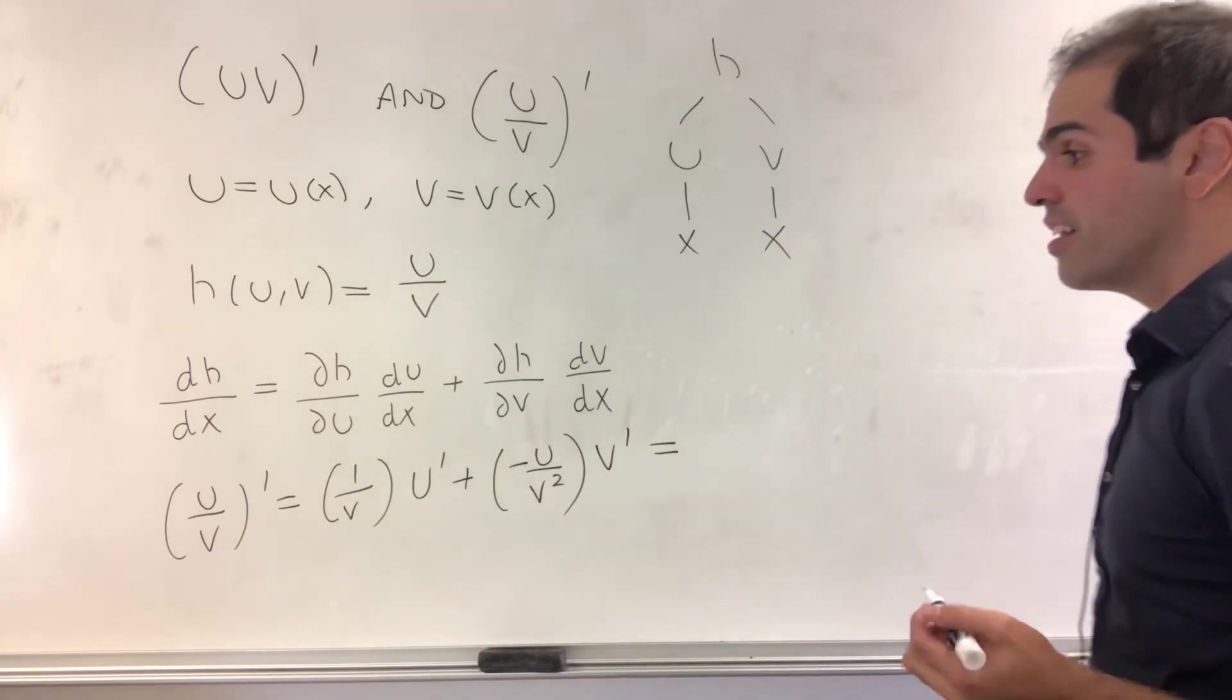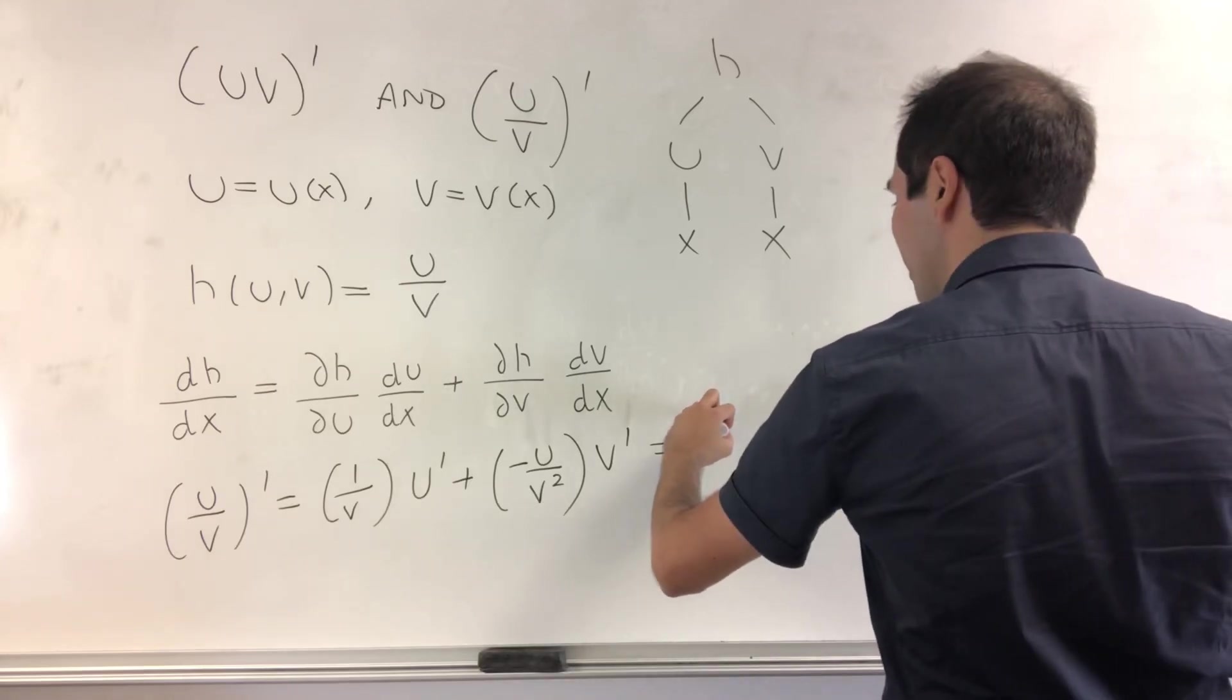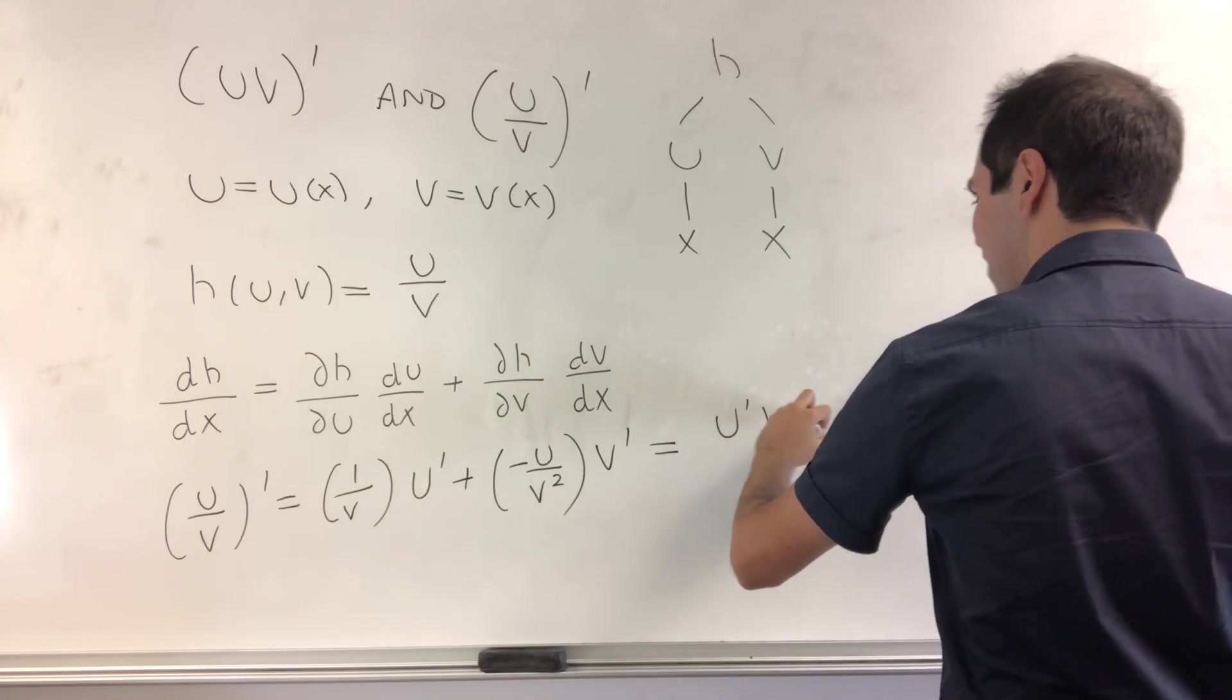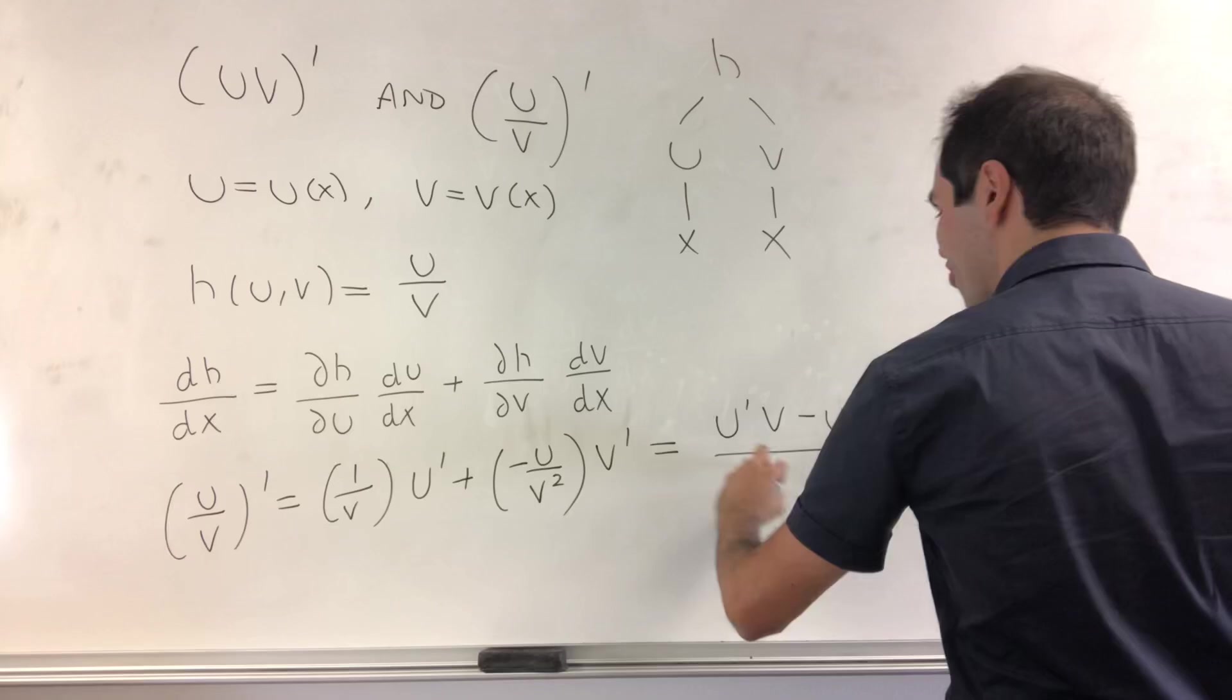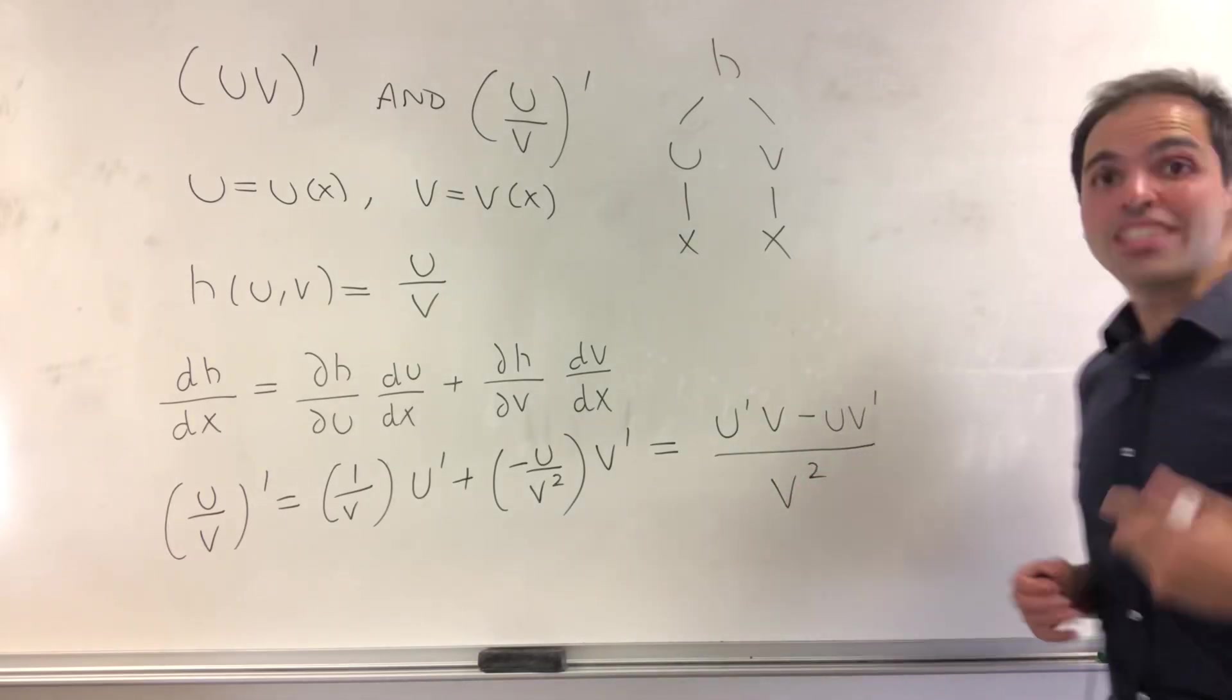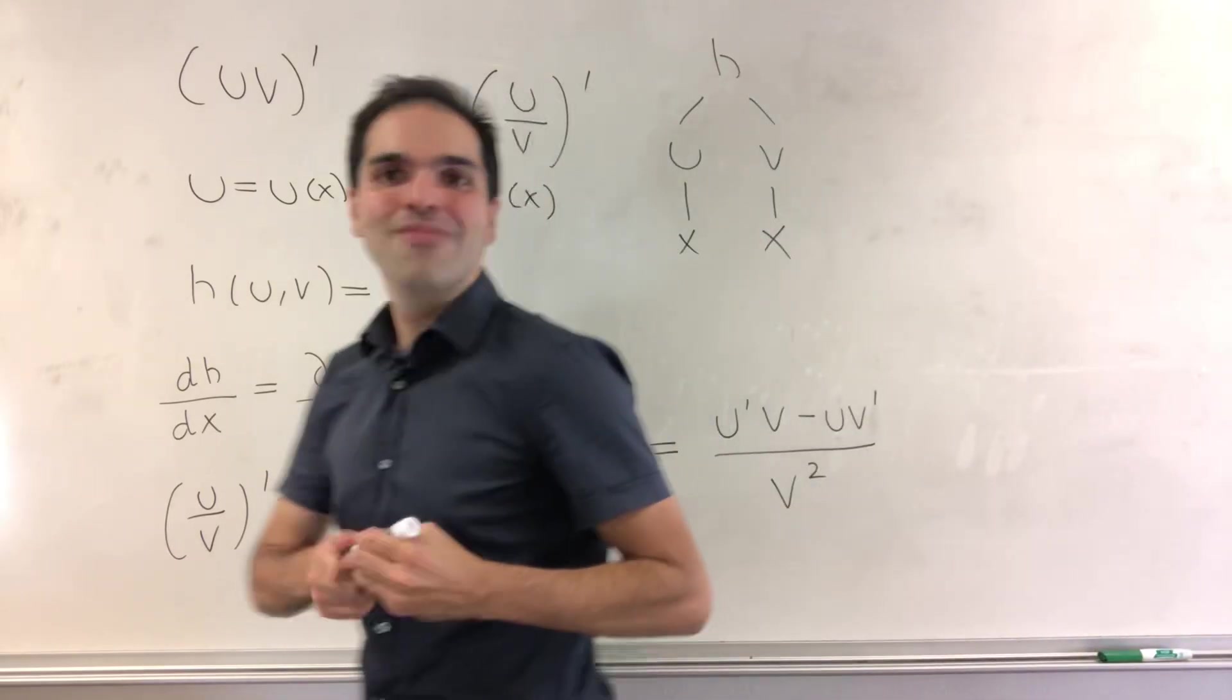And then put everything on a common denominator, and we get u prime v minus uv prime over v squared, which is the quotient rule. How amazing is that?